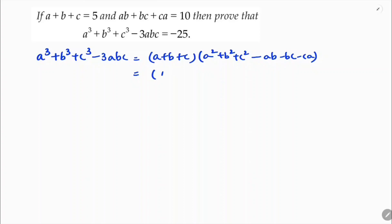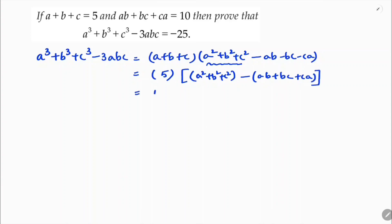We already have a plus b plus c which is 5, but we don't have the value of a square plus b square plus c square. Taking minus common gives us a square plus b square plus c square minus ab plus bc plus ca. We have the value of ab plus bc plus ca which is 10, so we need to find a square plus b square plus c square.